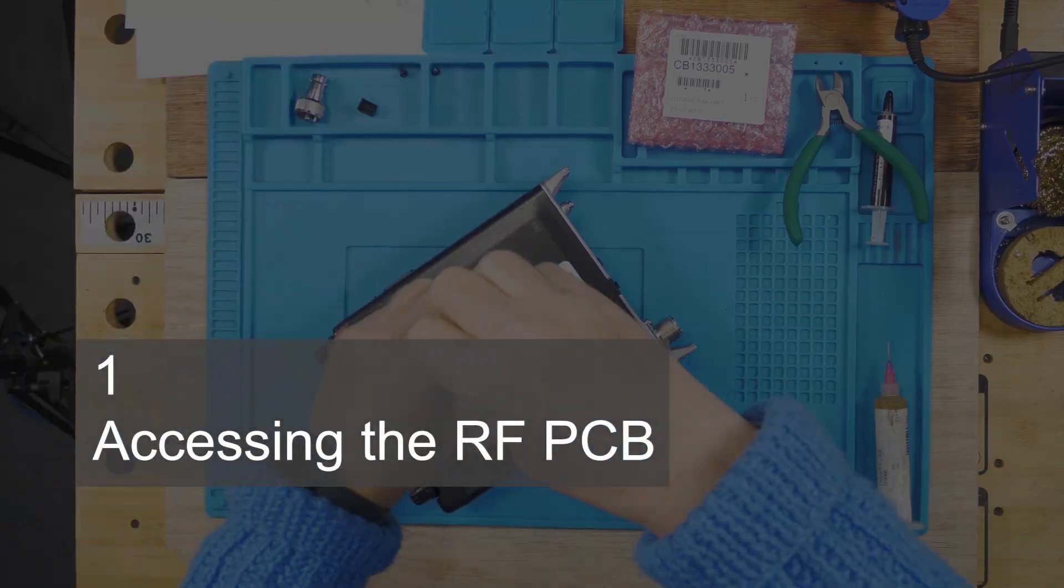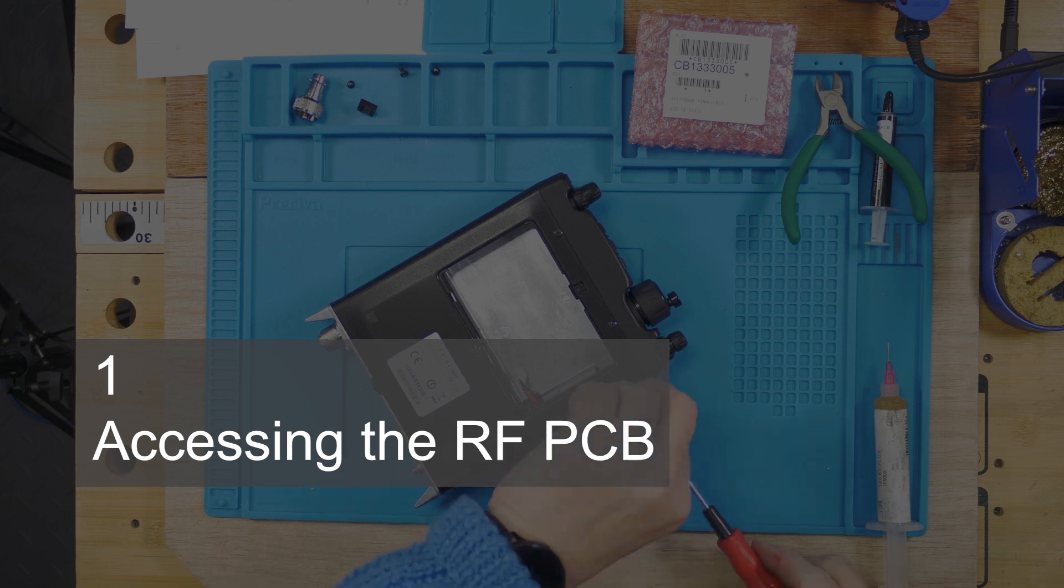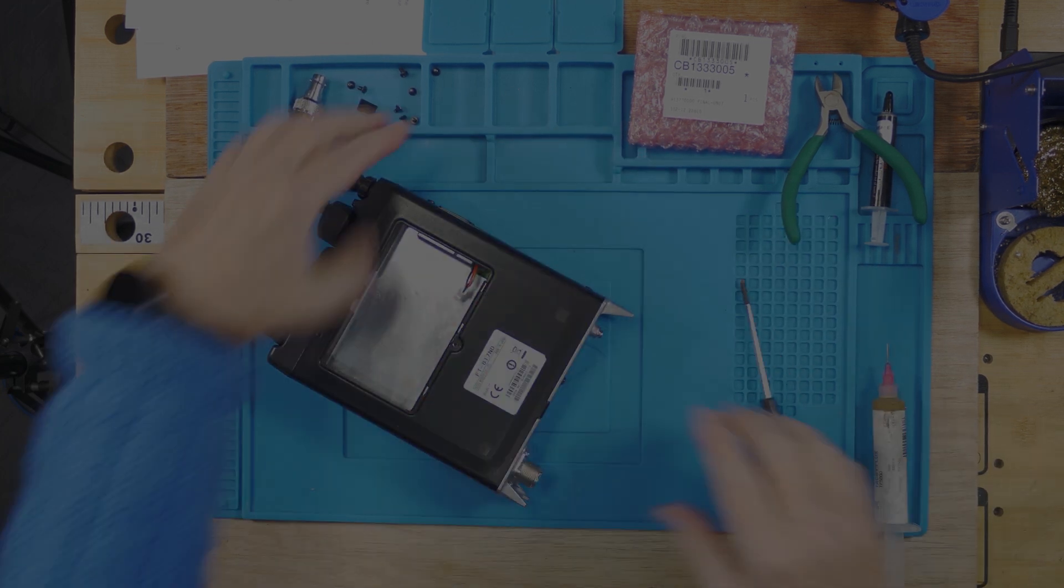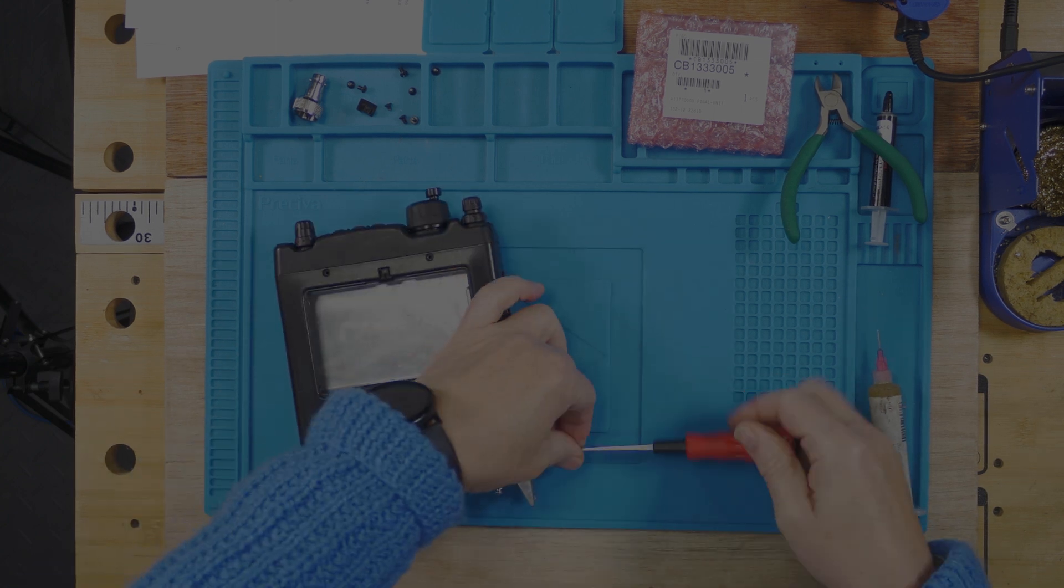To get to the RF power amplifier it's necessary to remove the bottom cover completely, so I took out all of the screws and also loosened or removed some of the top cover screws as well.